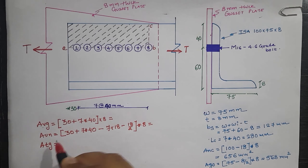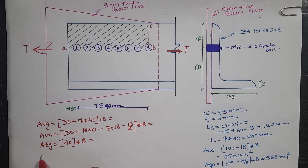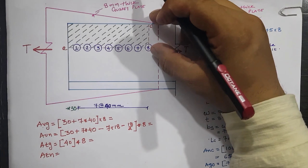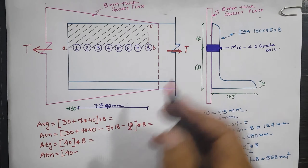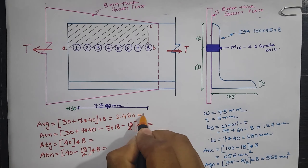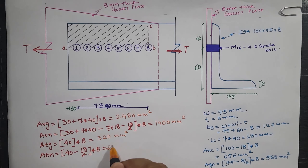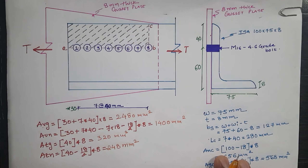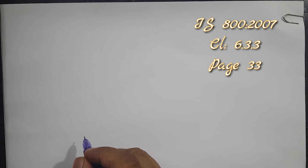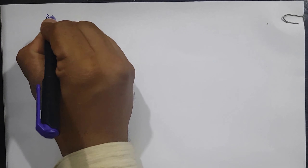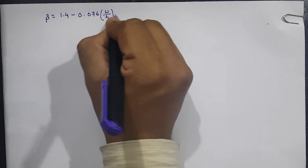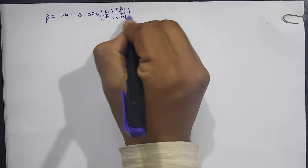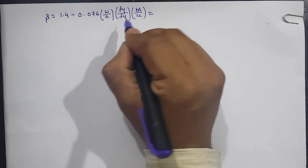The gross tension area Atg = 40 × 8, and the net tension area Atn = (40 − 18/2) × 8, which is the net area between points B to C. These terms are used in both the rupture strength and block shear strength calculations. From clause 6.3.3, page 33, the equation for beta is: β = 1.4 − 0.076 × (w/t) × (fy/fu) × (bs/Lc). Substituting all values from the above calculations: